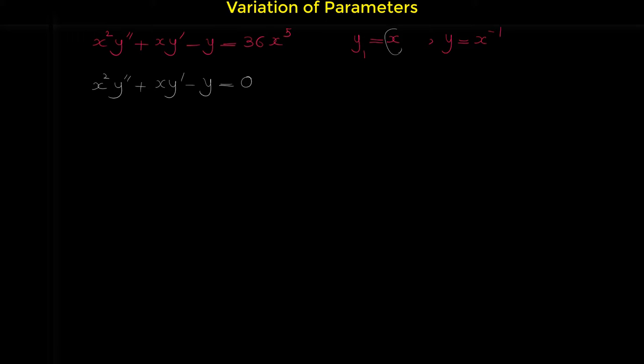Let us start with y equals x. We compute x squared times y double prime. The first derivative of x is 1 and the second derivative is 0. So y double prime is 0. Then x times y prime: the derivative of x is 1, so x times 1, minus y itself which is x. So minus x. The result is: 0 times x squared is 0, plus x minus x is 0. This shows that x is a solution for the homogeneous differential equation.